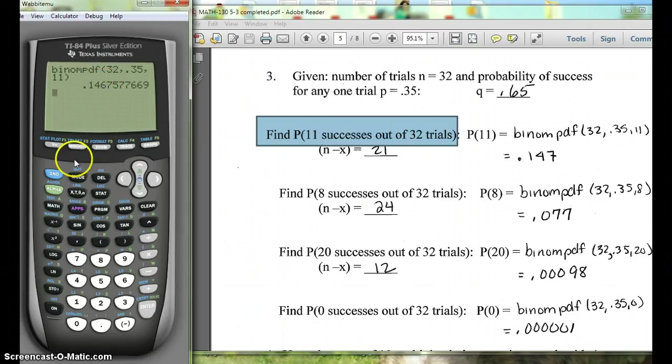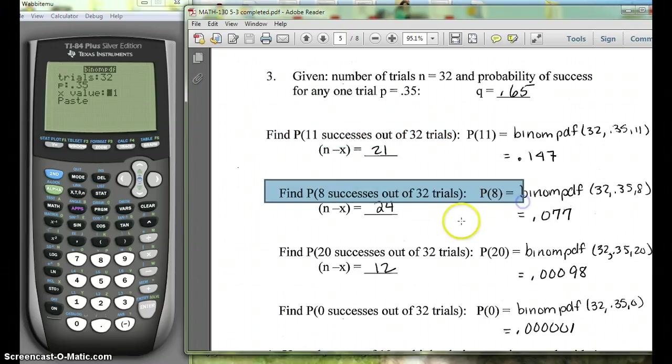Okay, let's do one more. Again, you hit second vars and you scroll down until you see binompdf. Here we still have 32 trials, our P value is still the same. The only thing that's changing is our X value for this one. And now we want X to be 8.